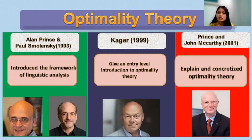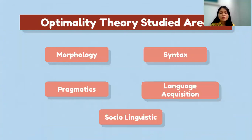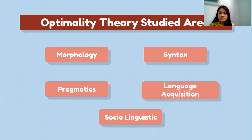Here are the experts who developed optimality theory: the first founders, Alan Prince and Paul Smolensky. When we talk about OT, it is not only discussed from phonological linguistics itself. It is also studied from many linguistic areas, such as morphology, syntax, pragmatics, language acquisition, and also sociolinguistics.